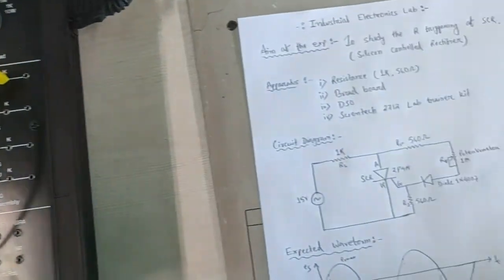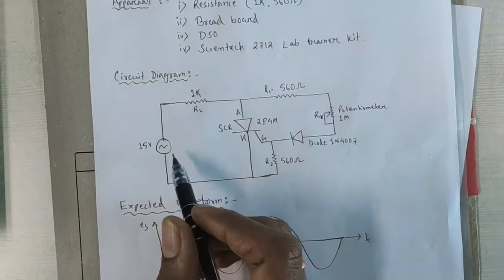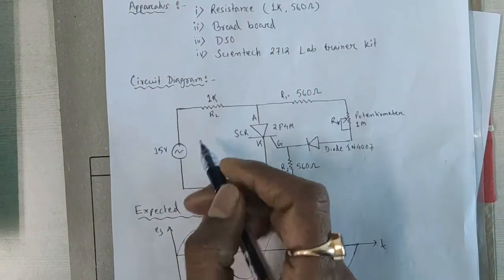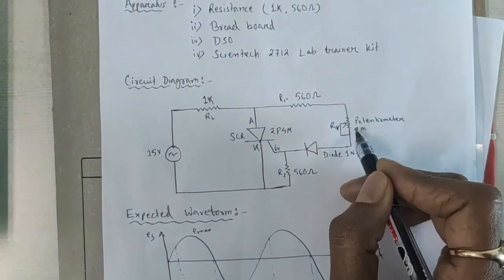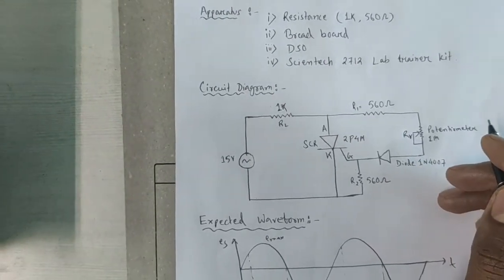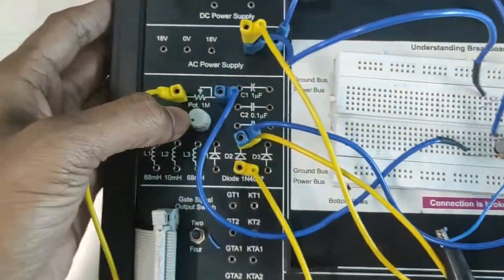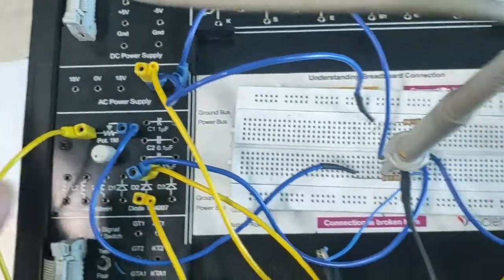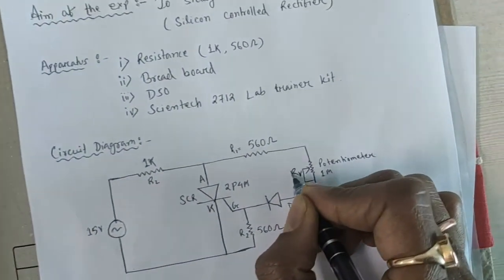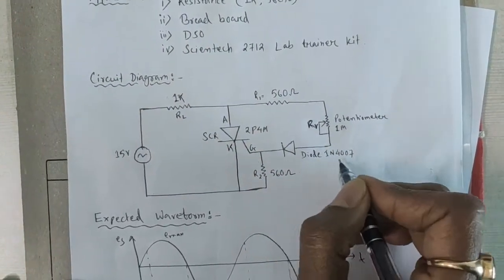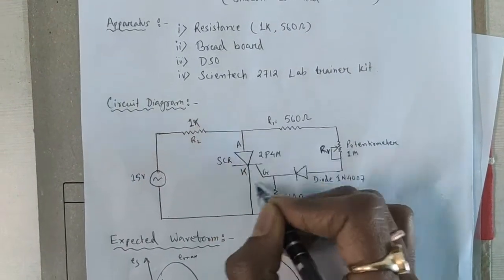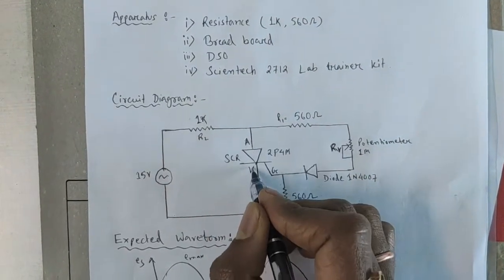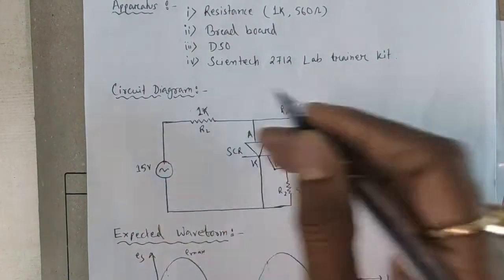Coming back to the circuit diagram. We have applied 15 volt AC supply, a 1K resistance used as the load resistance, R1 is 560 ohm, and a variable potentiometer denoted as RV. There is also diode 1N4007, R2 is 560 ohm, and this is the SCR — this terminal is the anode, this is the cathode, and this one is the gate. The circuit is complete.